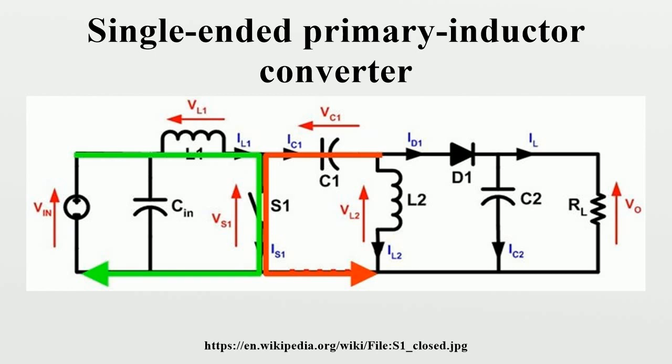Since S1 is a short while closed, and the instantaneous voltage VC1 is approximately VIN, the voltage VL2 is approximately minus VIN.